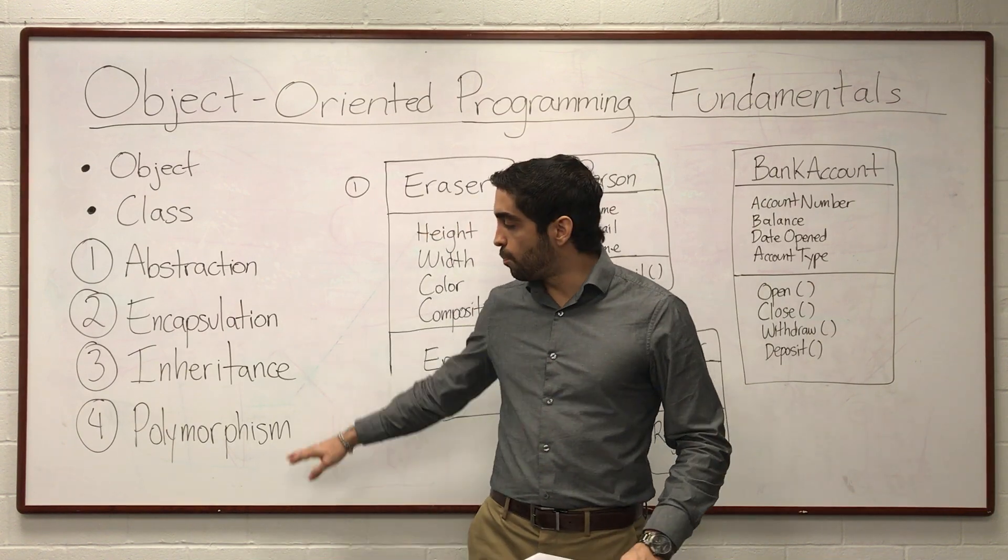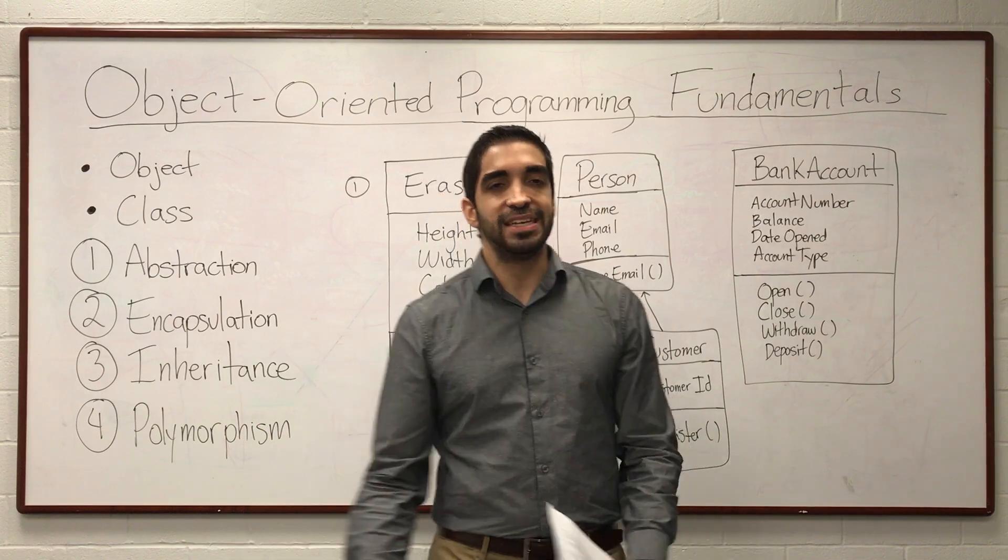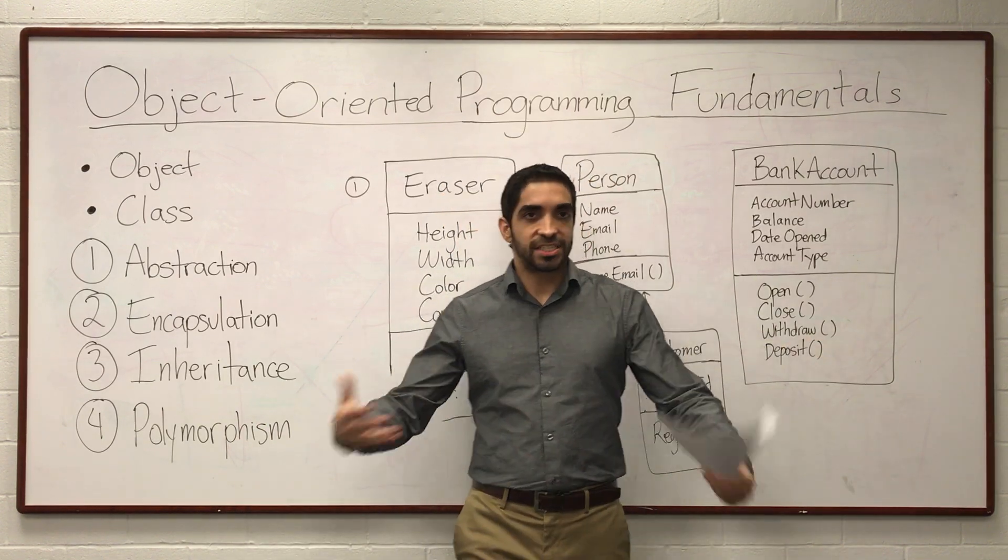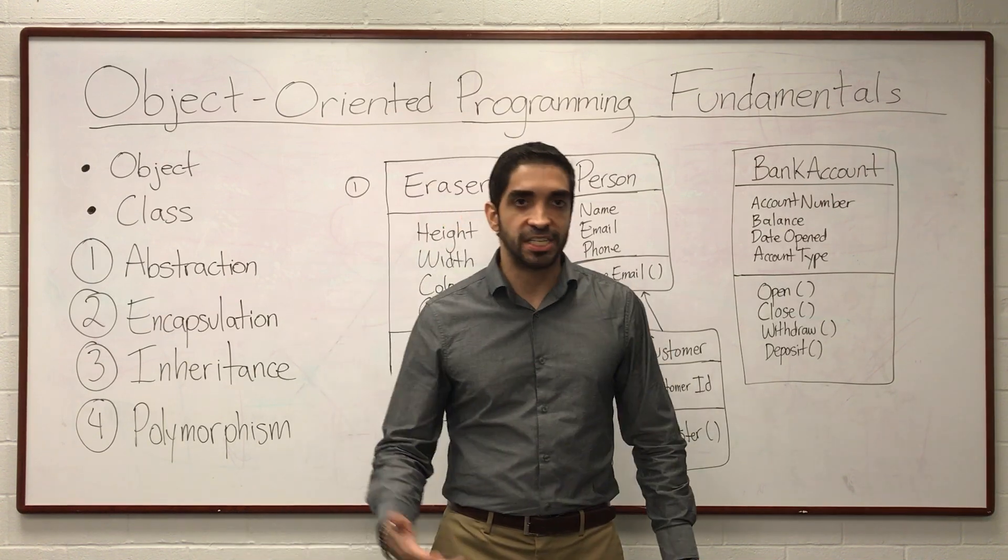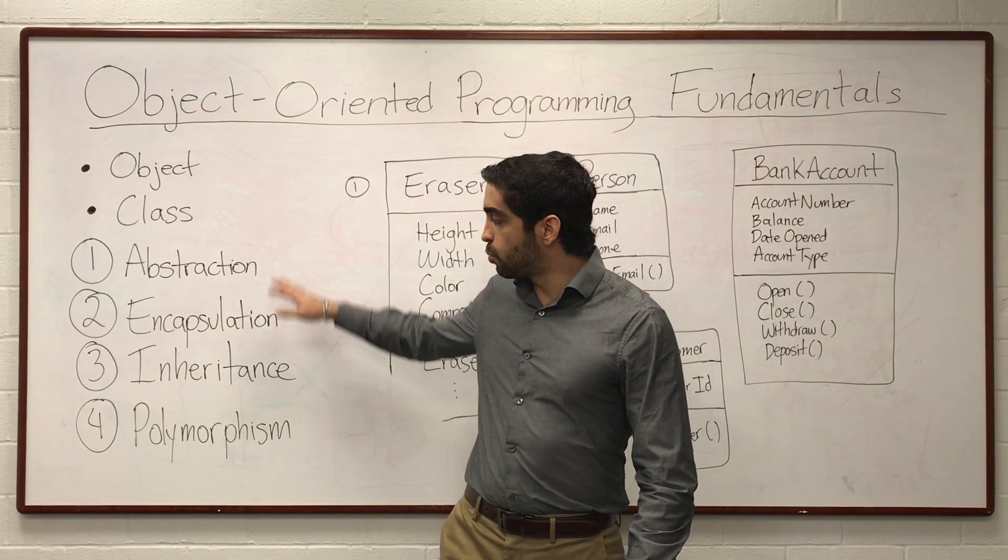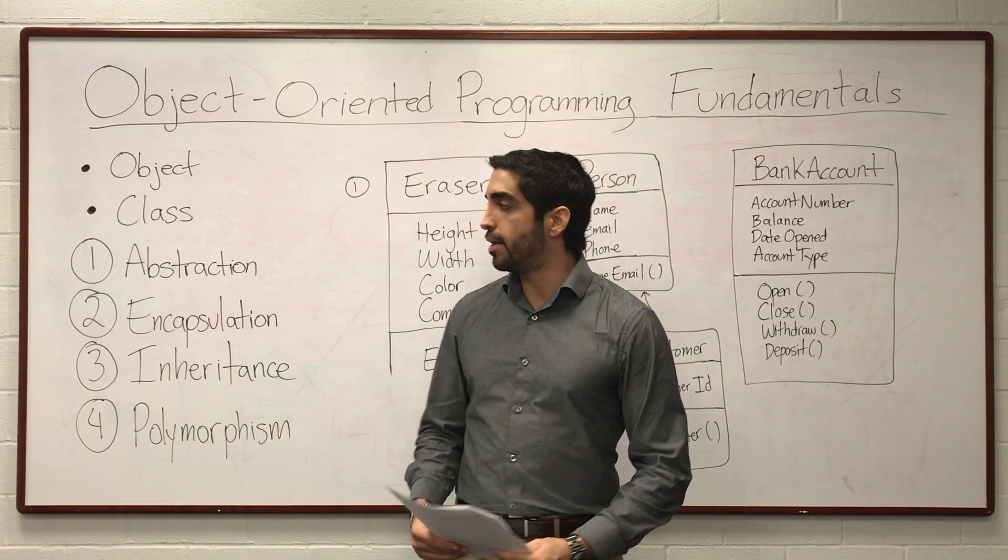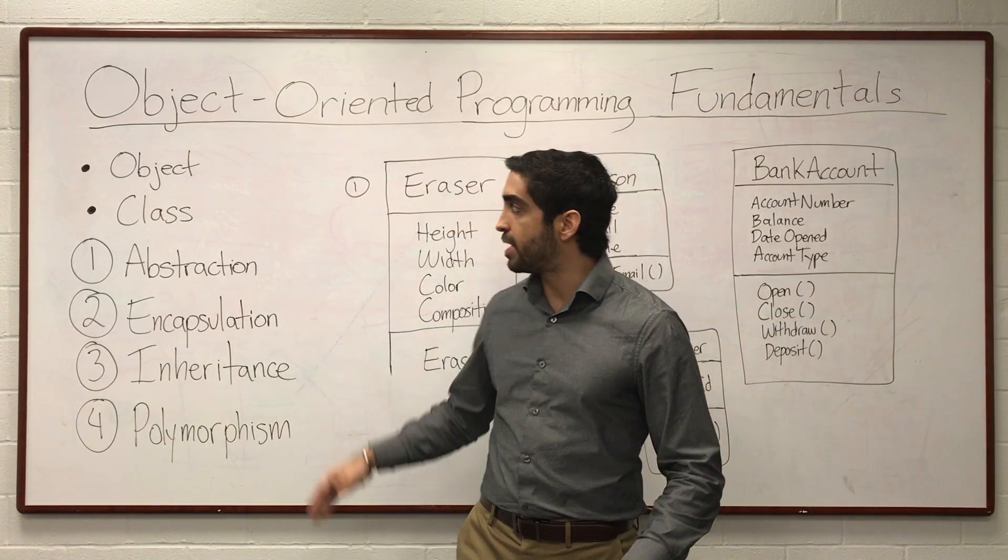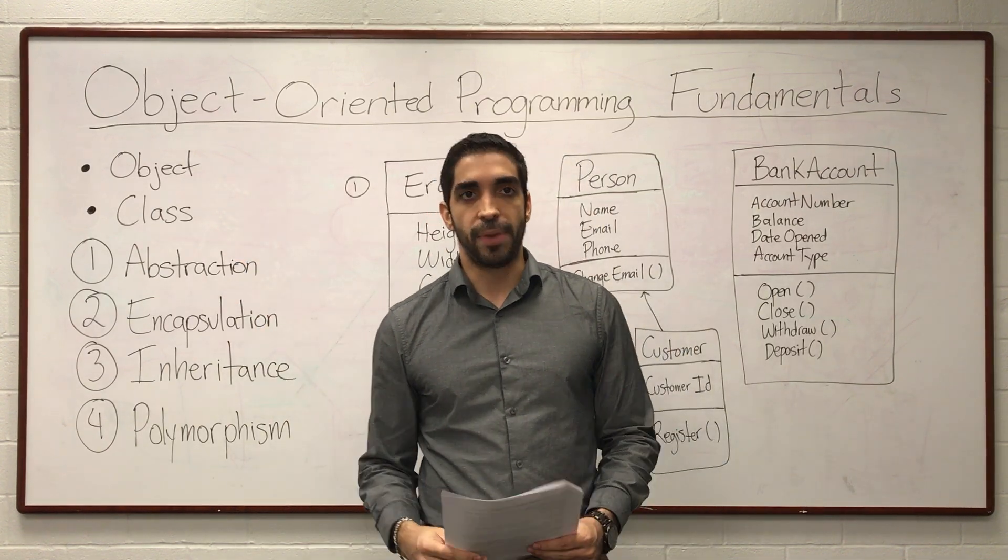This is not too important right now. You don't have to go out and be looking for polymorphism. It typically, like in this case, arises naturally. You don't have to be thinking about it too much. So it's really going to arise naturally in your application. So those will be the four fundamental ideas of object-oriented programming. And of course, the object and the class, which is what the application is really made up of.